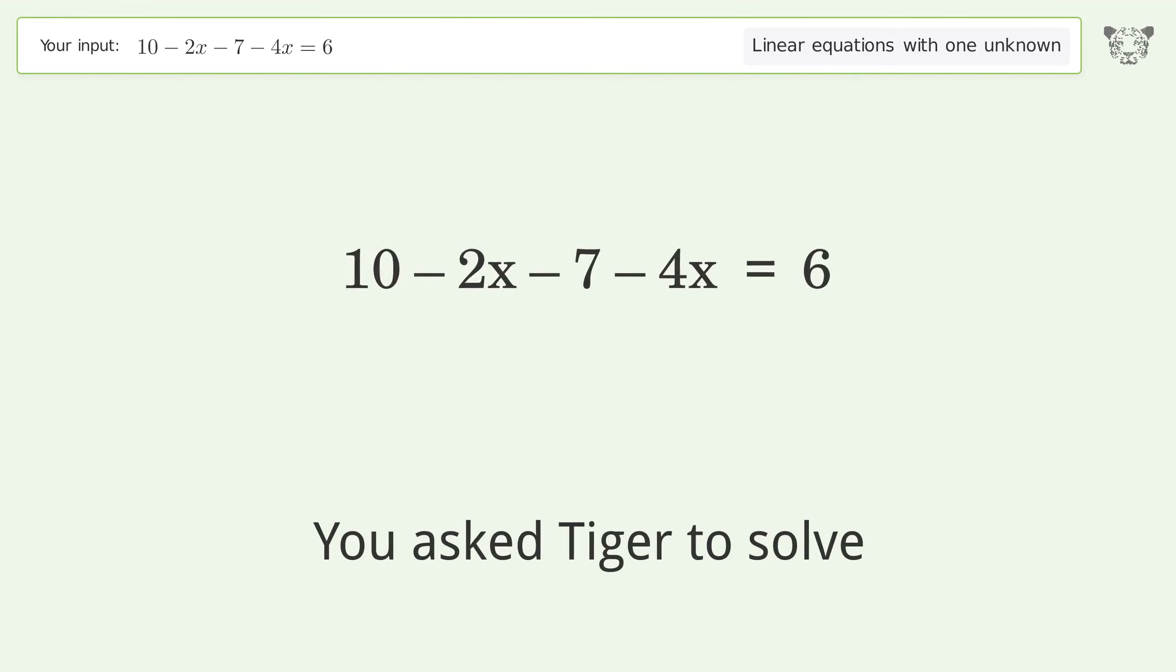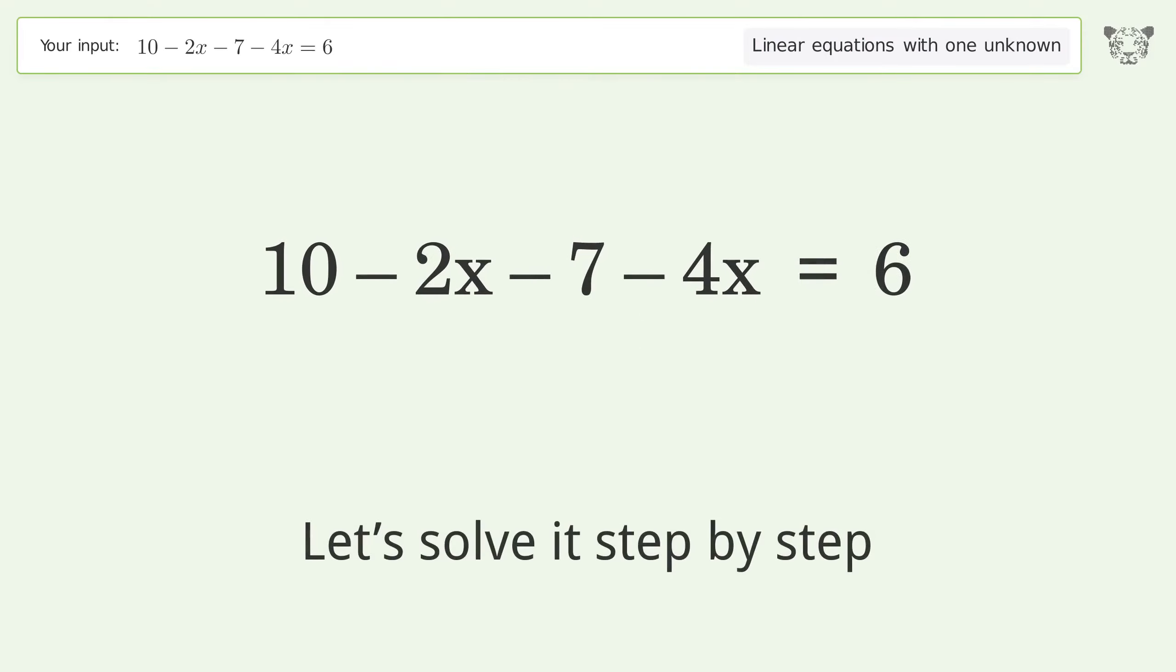You asked Tiger to solve this. This deals with linear equations with one unknown. The final result is x equals negative one over two. Let's solve it step by step.